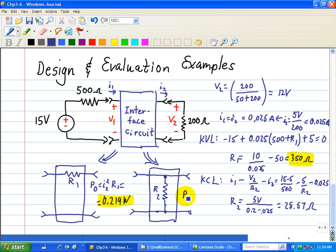and see what the power dissipation is in R2. In R2, the power dissipation is V2 squared over R2. We know V2 is 5,